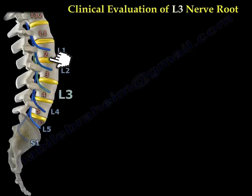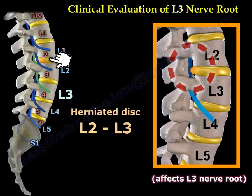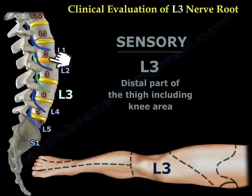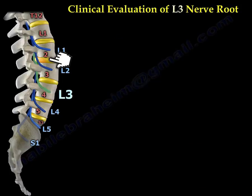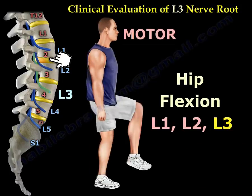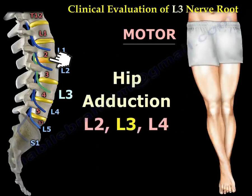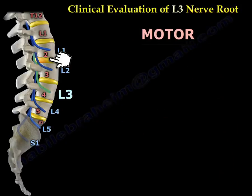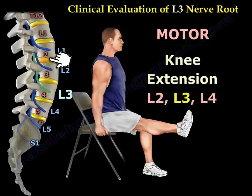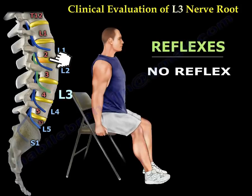A disc herniation between L2 and L3 will affect the L3 nerve root. The sensation of L3 will be the distal part of the thigh, including the knee area, as illustrated in this diagram. The motor includes hip flexion (L1, L2, L3), hip adduction (L2, L3, L4), and knee extension (L2, L3, L4). There is no reflex for L3.